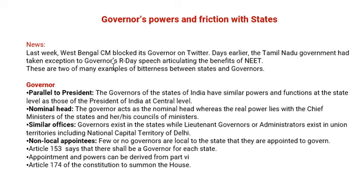Article 153 says that there should be a governor for each state, and appointment powers are also derived from Part 6. Article 174 of the constitution says that the governor has the right to summon the house, and there are also many articles which say that the governor has the right to summon the house, dismiss the house, and even pass or hold a bill.